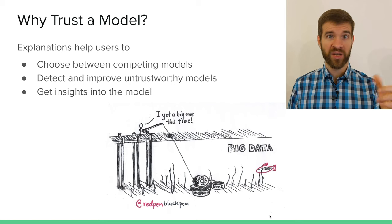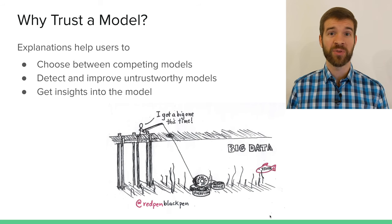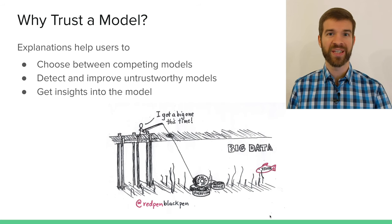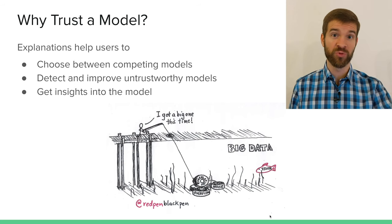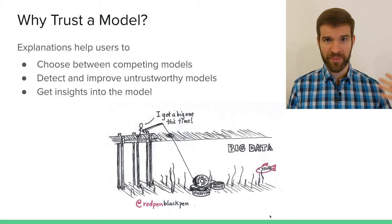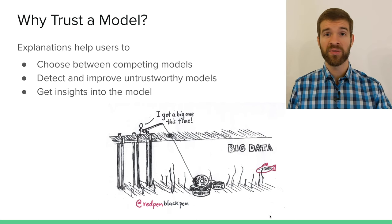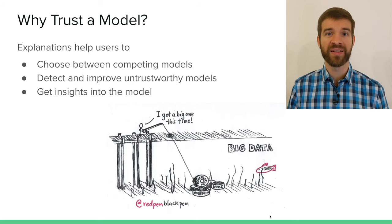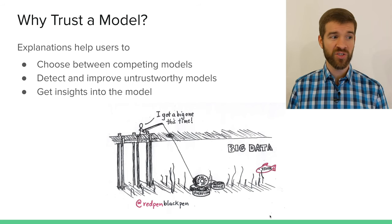Remember the classification of melanoma — the training precision was quite good, but it was absolutely untrustworthy because the network was not looking at the thing we wanted it to look at, but at the ruler that was also in the image. Being able to ask a network 'show me where in the image you focused on and why' can really help us detect and eliminate such errors.